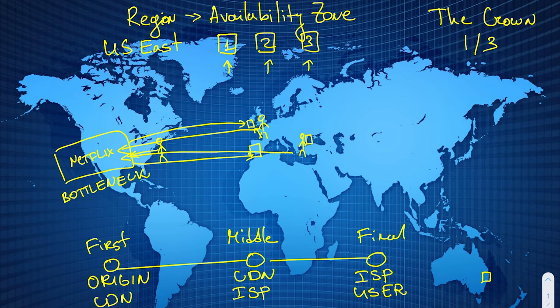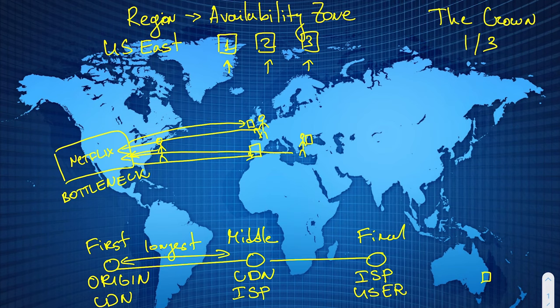The hardest segment is the first mile because it usually travels the longest distance. CDN to ISP is actually quite reliable — enterprise-level quality speed — because many CDNs are smartly located very close to internet service providers, so the distance they need to travel is quite short. From the ISP to you, it travels via cellular towers, underground fiber, or any other means you'd consider the internet.